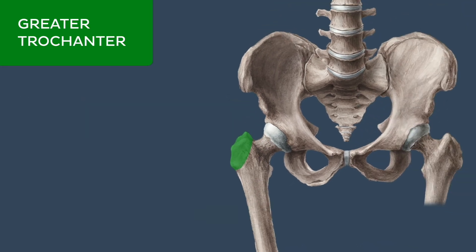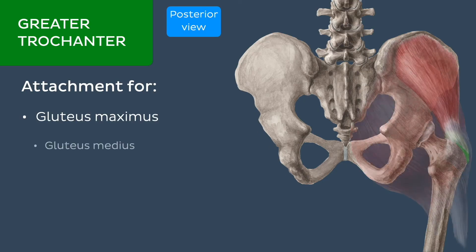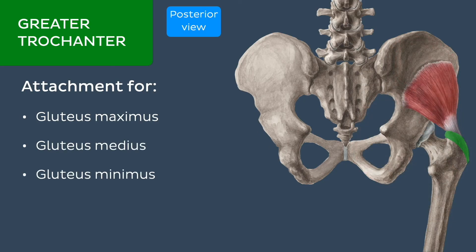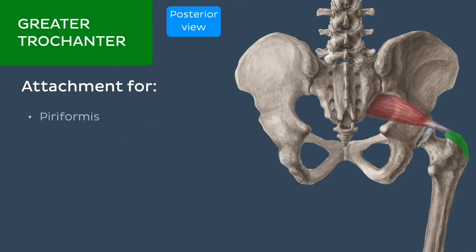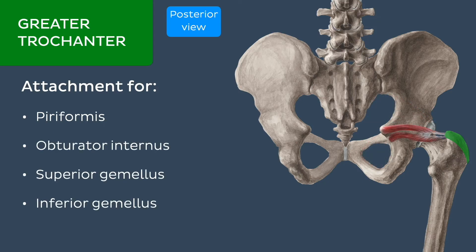The greater trochanter is the site of attachment for the following muscles: the gluteus maximus, medius and minimus, the piriformis, the obturator internus, and the superior and inferior gemelli.